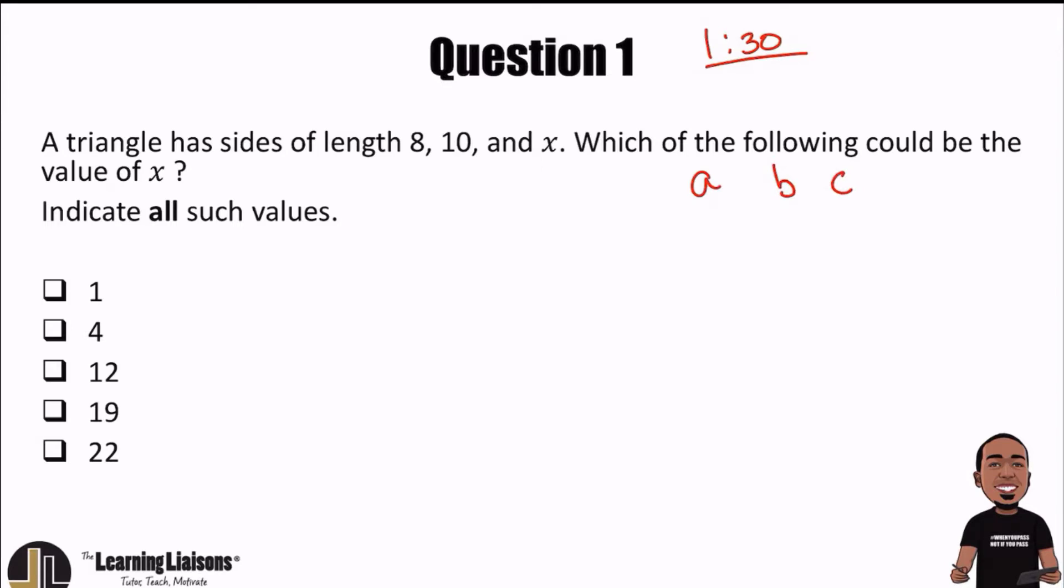What needs to happen is that any two sides, so if you add them together, it has to be greater than the third side. If that isn't true, then what happens is you don't have a triangle. So you can do A plus B is greater than C, you can do B plus C is greater than A. All I'm saying is any two sides added together is greater than the third.